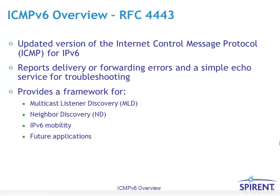ICMPv6, Internet Control Message Protocol for IPv6, is covered in RFC 4443. It's an updated version of the Internet Control Message Protocol for IPv6. It reports on delivery or forwarding errors and provides a simple echo message service for troubleshooting — in other words, ping. It also provides a framework for a number of other control plane protocols for IPv6, including multicast listener discovery, neighbor discovery, IPv6 mobility applications, and a range of future applications. It is the control plane for IPv6.